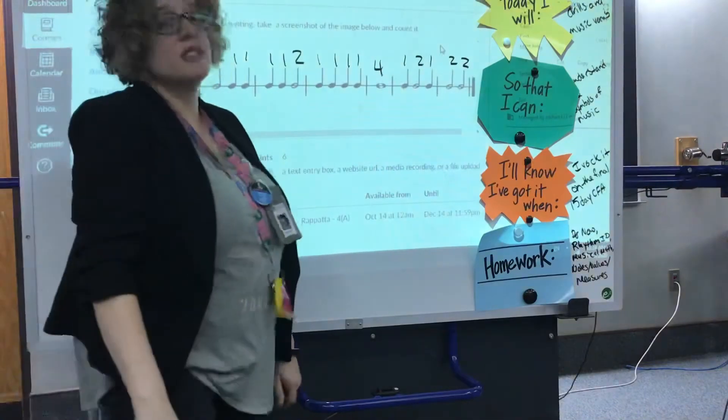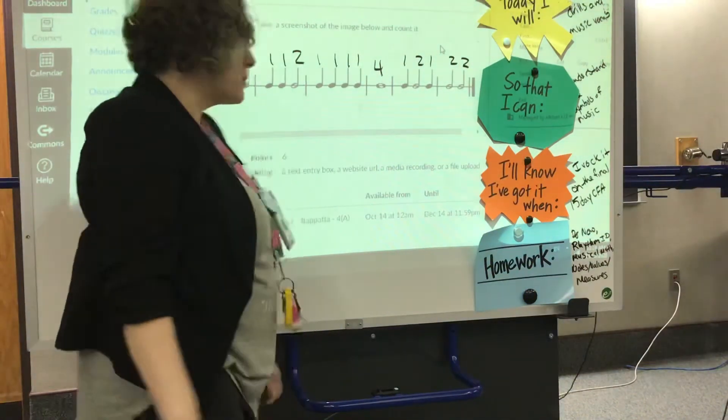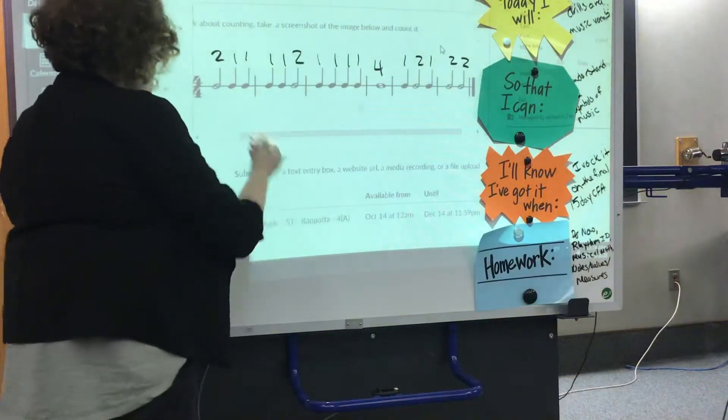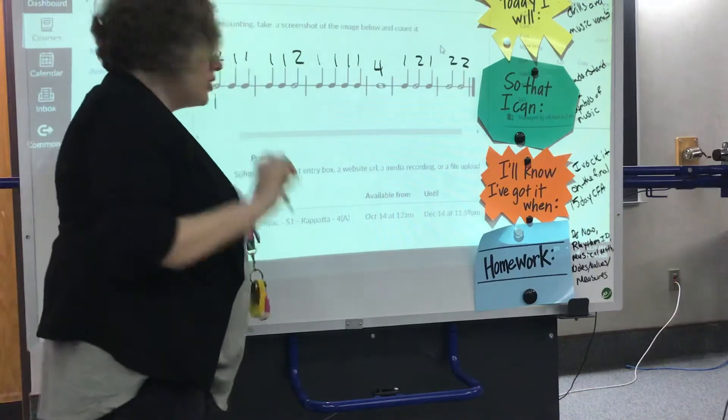If I ask for the value, this would be right, but I want to count. So counting we start with one. So going back to this measure, I'm going to put one here, but I know it needs to have two beats.